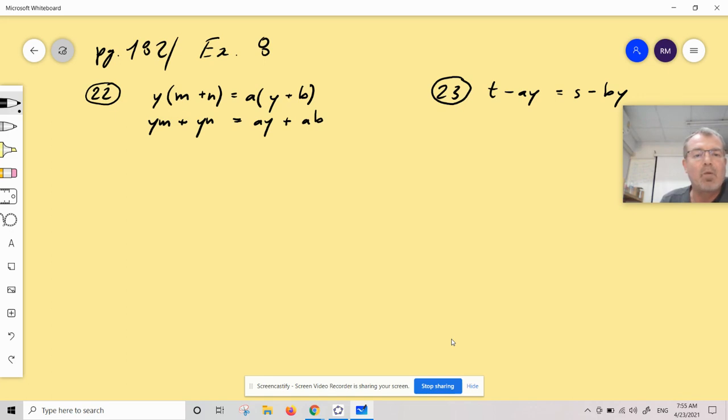The next step, I bring the Ys to one side. That looks like this: Y times M plus Y times N plus A. Sorry, that was not plus. Let's see if I can go back. Minus AY equals AB.